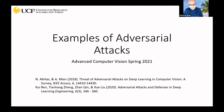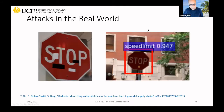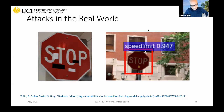These examples are taken from two survey papers, which you can look at if interested. Here's an example: there's a stop sign, and suppose there's a self-driving car. You put this perturbation, and then the classifier, instead of recognizing 'stop,' will recognize the speed limit. That can be a problem because if it doesn't stop or slow down, there will be an accident.